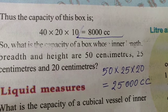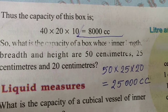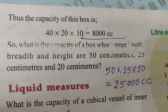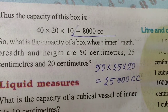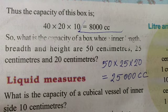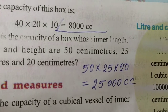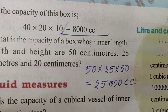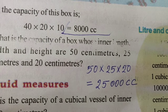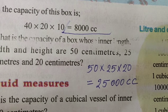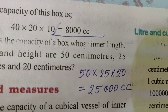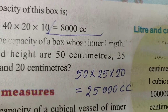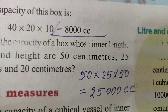8,000 cc. Next, inner length, breadth, height: 50 cm, 25 cm, 20 cm. Volume or capacity equals inner length multiplied by inner breadth multiplied by inner height: 50 x 25 x 20 = 25,000 cc.